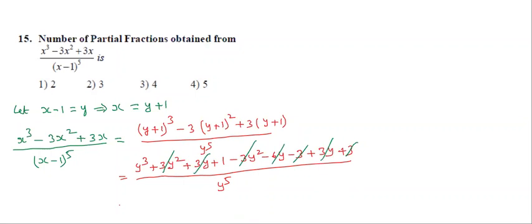Students, observe the remaining terms: y³ and plus 1. So y³ divided by y⁵ gives 1/y², plus 1 divided by y⁵. How many partial fractions are possible? Only 2. The first option is correct. By observing the denominator, the power is 5 — don't say the number of partial fractions is 5. Sometimes numerator terms cancel. Do the calculation and you will get 100% correct answer.